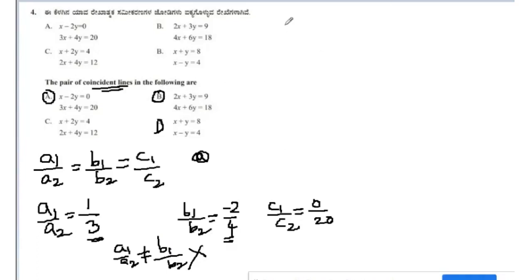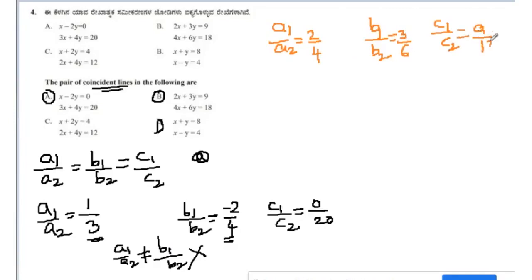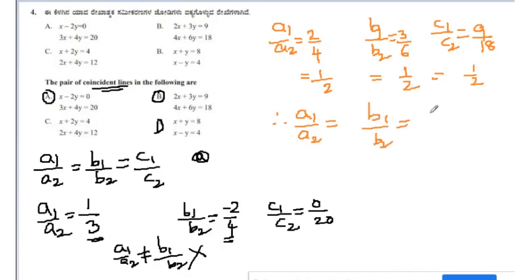Checking option B: a1/a2 = 2/4, b1/b2 = 3/6, and c1/c2 = 9/18. All three ratios are equal to each other. Therefore the correct option for the coincident lines is B.